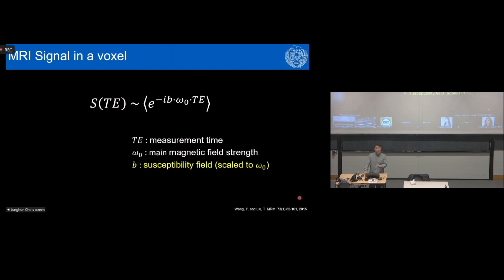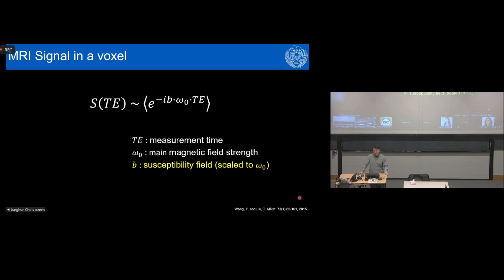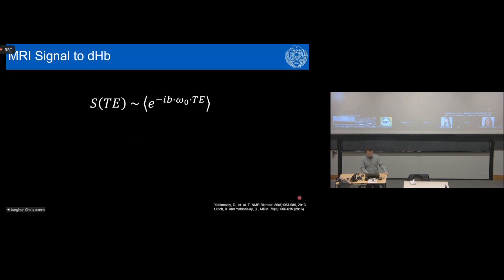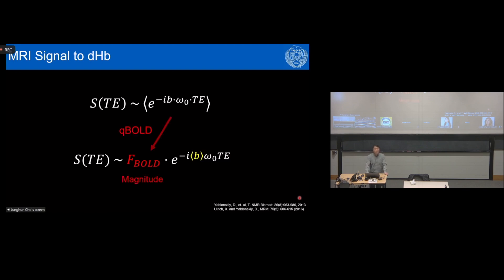Biophysics modeling starts from the MRI signal equation. The MRI signal is an ensemble average of the phase vector e^(−i·phase) over all spins. TE is the echo time, omega-zero is the main magnetic field strength such as 1.5 or 3 tesla in a clinical scanner. B is the susceptibility field scaled to omega-zero. From B we can estimate signal drop due to deoxyhemoglobin susceptibility, considering its effect on the magnitude signal via QBOLT modeling and on the phase signal via QSM modeling.